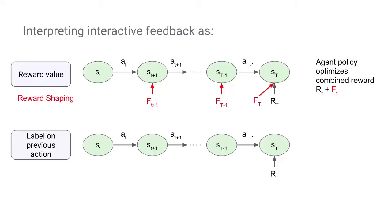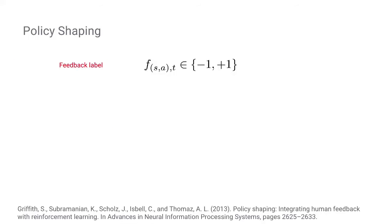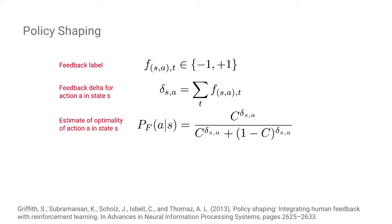Another option is to use feedback as a label on the previous action. The policy can identify that if a turn got negative feedback, then the previous action was not optimal, and it should not take that action when reaching that state again. This is what we are currently focusing on, using a formulation from previous work by Griffith, where feedback is defined as a minus one or plus one label on a state-action pair, accumulated over multiple turns.